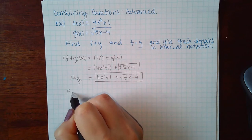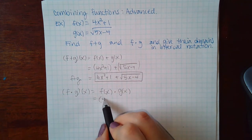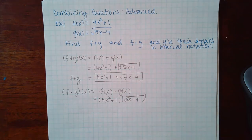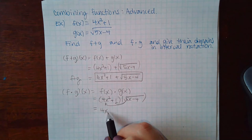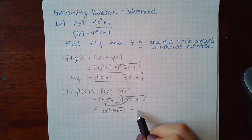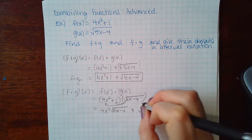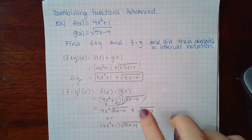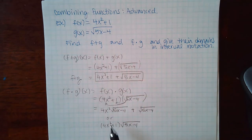For f times g, take the expression for f(x) — which is 4x²+1 — times the expression for g(x) — which is √(5x−4). You could distribute if you want, or leave it factored. The form 4x²+1 times √(5x−4) is also acceptable since the square root already acts as a grouping mechanism.